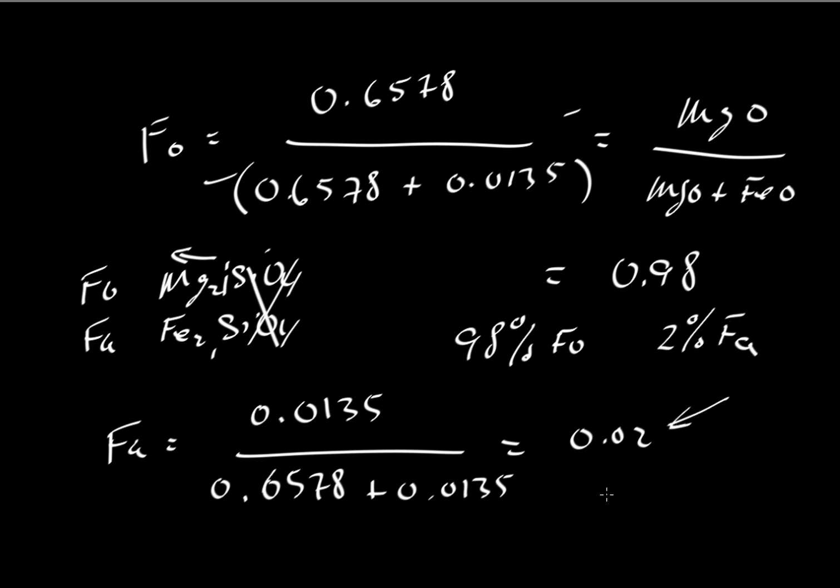Now, if we had other components, like a calcium-bearing component or a manganese-bearing component, then we'd have to carry out these calculations up to the 1 minus the number of components that we have.